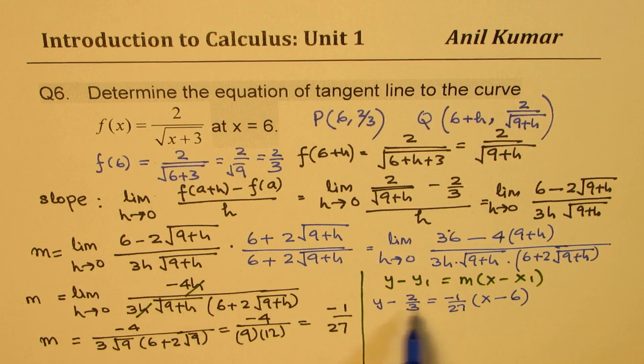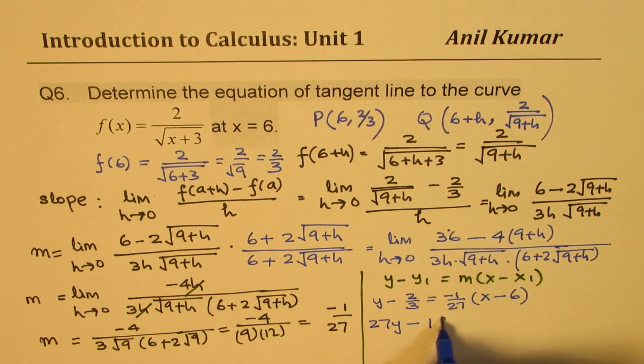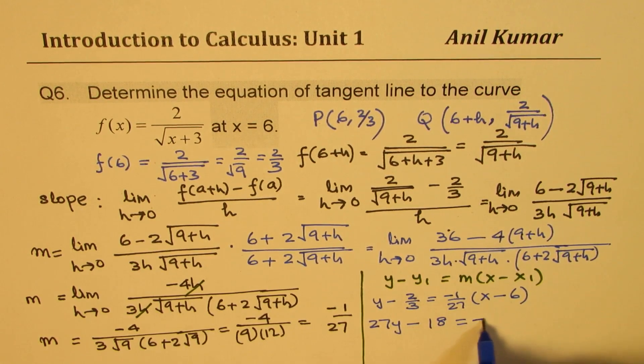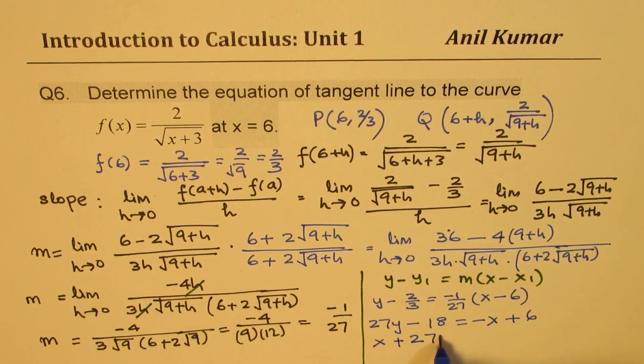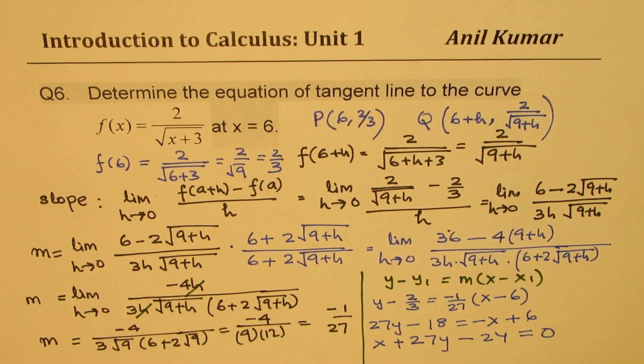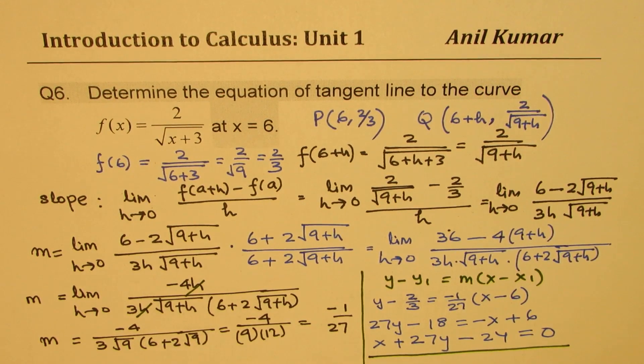And now to simplify, we'll just multiply by 27. So we get 27y - 18 = -x + 6. Bringing all the terms together, x this side plus 27y, bringing 6 this side gives us -24 = 0. So that becomes the equation for us. So this was plus and we bring it to this side, so it becomes minus. So that becomes the equation of tangent line.